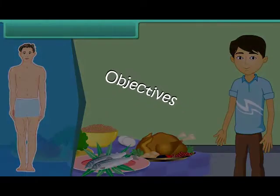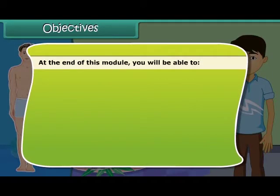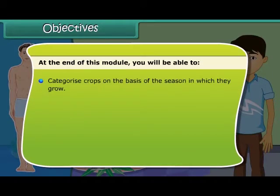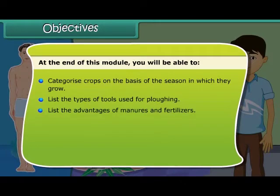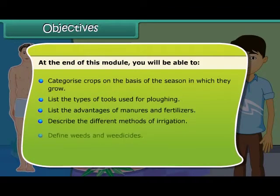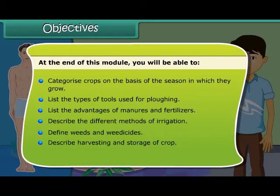Objectives. At the end of this module, you will be able to: categorize crops on the basis of seasons in which they grow; list the types of tools used for plowing; list the advantages of manure and fertilizers; describe the different methods of irrigation; define weeds and weedy sites; describe harvesting and storage of crops; and explain animal husbandry.